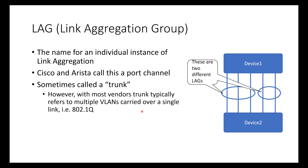A link aggregation group is the name for an individual instance of LAG. Cisco and Arista call this a port channel. Some other vendors call it a trunk, although most vendors when they use the term trunk actually mean multiple VLANs over a link — 802.1Q. In this diagram, we have two devices connected via two different LAGs, usually denoted by that circle.